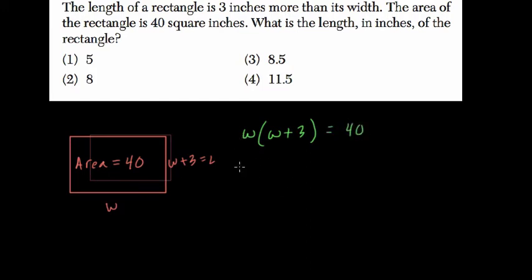So here I distribute the w, so w times w is w squared plus w times three is three w, that equals 40. Now to solve a question like this, a quadratic, a great technique is to subtract the number here over back to the left-hand side.